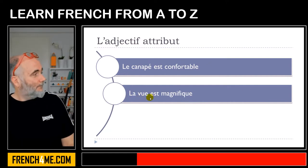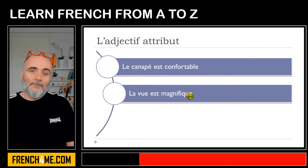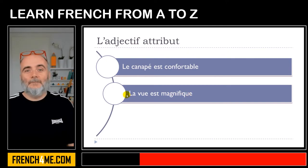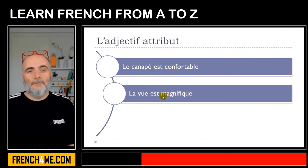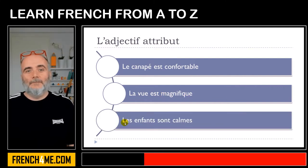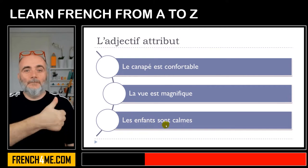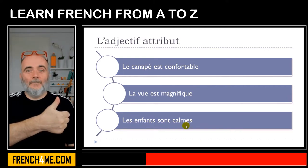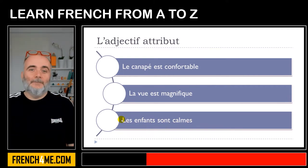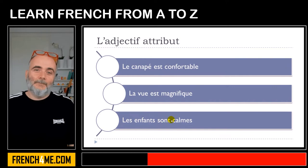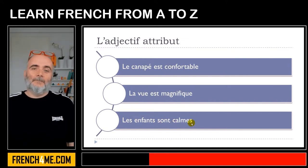La vue est magnifique. Exactly the same situation here: you get la vue, then you get the verb être, and after that you get your adjective. Les enfants sont calmes — same thing: you get les enfants, then the verb être, and the adjective follows after.